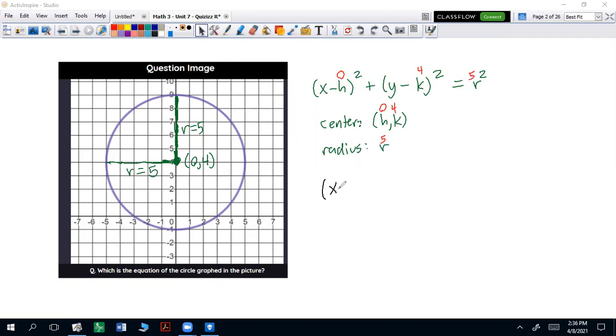So it's going to be (x-0)², which is just x², plus (y-4)² equals 5².